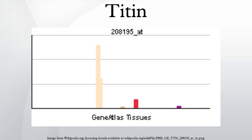Mutations in this gene are associated with hereditary myopathy with early respiratory failure, early onset myopathy with fatal cardiomyopathy, core myopathy with heart disease, centronuclear myopathy, limb girdle muscular dystrophy type 2J, familial dilated cardiomyopathy 9, hypertrophic cardiomyopathy, and tibial muscular dystrophy. Further research also suggests that no genetically linked form of any dystrophy or myopathy can be safely excluded from being caused by a mutation on the TTN gene. Autoantibodies to Titin are produced in patients with the autoimmune disease scleroderma.